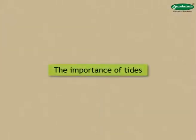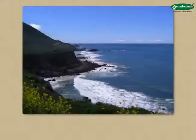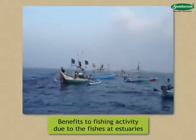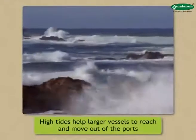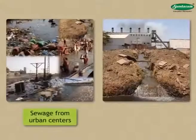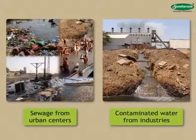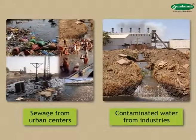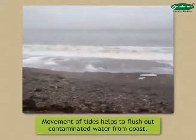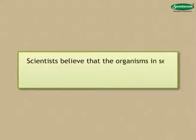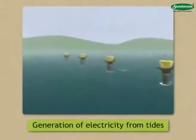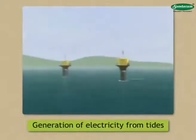We shall study about the importance of tides. During high tide, along with the seawater, large quantities of fish rush towards the estuaries, which benefits fishing activity there. As the water level rises at the time of high tides, it enables larger vessels to reach and move out of ports. The sewage from urban centers, contaminated water from industries, etc., are released into the sea in coastal areas. The to and fro movement of tide waters helps flush out this contaminated water from the coast. Scientists believe that organisms in the sea must have moved onto land during high tides and subsequently developed there. Attempts are now being made to generate electricity using the phenomena of tides.